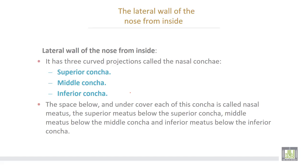The lateral wall of the nose, from inside, has three curved projections called the nasal conchae: number one, the superior concha; then the middle concha; and the inferior concha. The space below and under cover of the edge of each concha is called the nasal meatus.